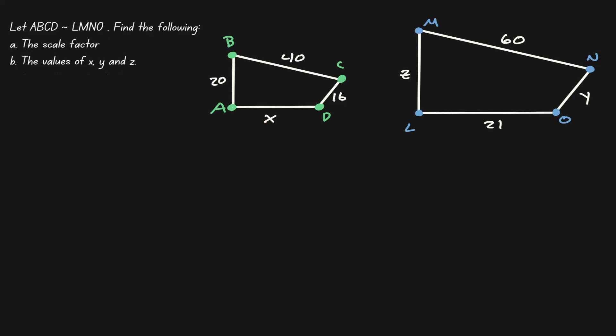Let's start by defining the direction of this similarity. We'll go from left to right. Because of this defined direction, we can call the right-hand side the image and the left-hand side the pre-image.